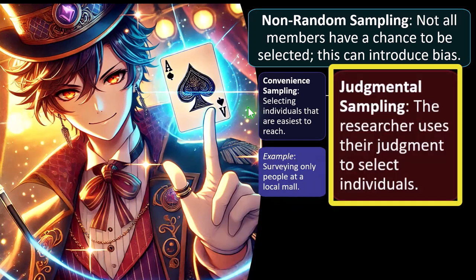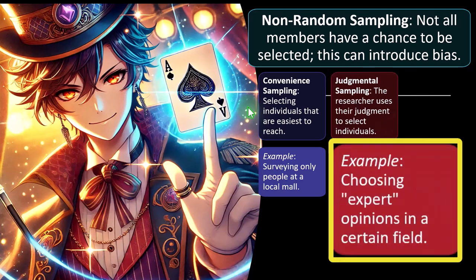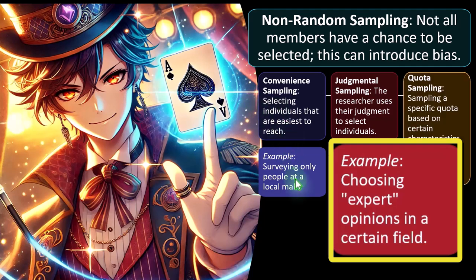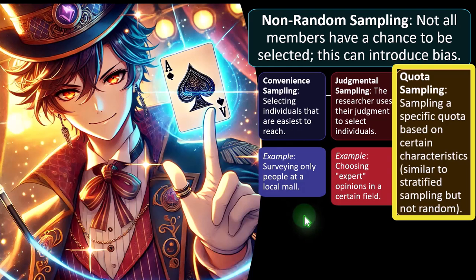Judgment sampling is where the researcher uses their own judgment to select individuals. Example: choosing expert opinions in a certain field. If you're asking about plate tectonics, random people won't know what you're talking about, so you'd want to seek out the experts in that field and try to get some randomness within that expert population — people who actually know what they're talking about in that area.